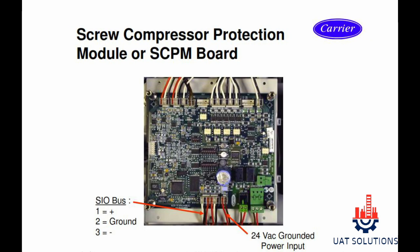The SIO bus has three wires: one is for positive, two is ground, and three is negative. The board is powered by 24 volt AC.